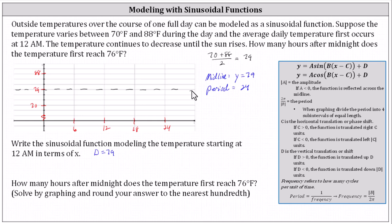Just remember at 12 a.m., or when x equals 0, the temperature is the average temperature of 79 degrees and therefore the graph contains the point 0 comma 79. Because we're starting here at the midline we should recognize we'll be using the sine function rather than the cosine function to model the temperature.